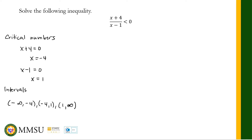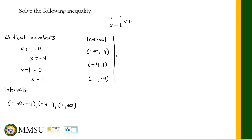Just like what we did in polynomial inequality, we are going to use the table form. In the first column we write the intervals: negative infinity to -4, -4 to +1, and +1 to infinity. In the second column we write the test values. We pick a number from each interval: -5 for the first, 0 for the second, and 2 for the third.